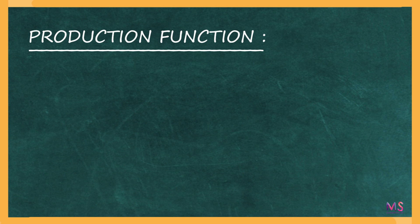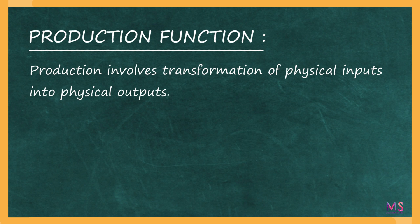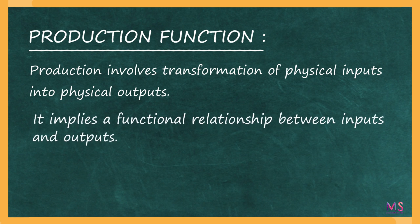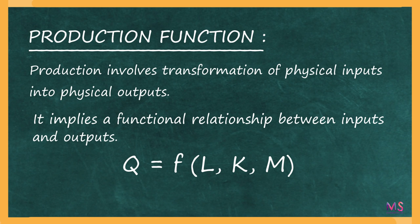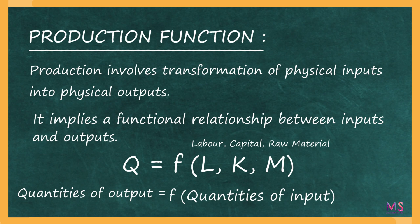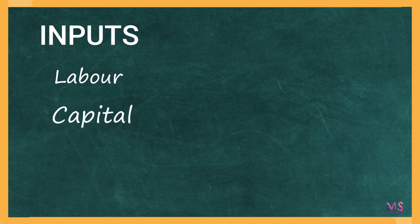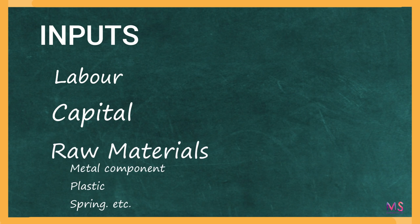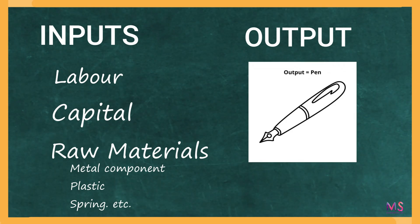We already know that production involves the transformation of physical inputs into physical outputs. This depicts a functional relationship between the inputs and outputs. Mathematically, we write it as quantities of output as a function of quantities of inputs. For instance, inputs like labor, capital, and raw materials such as metal components, plastic, spring, and many other inputs are required to form our final product — the output — which is the pen.